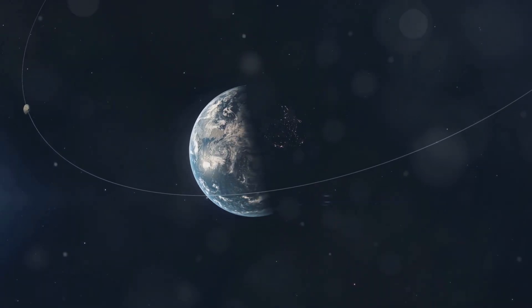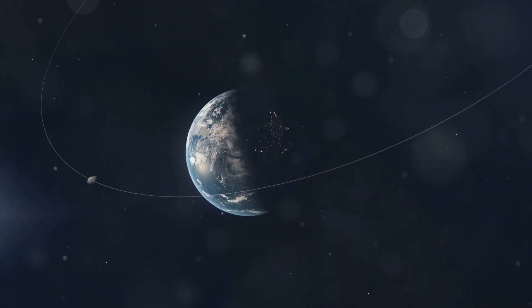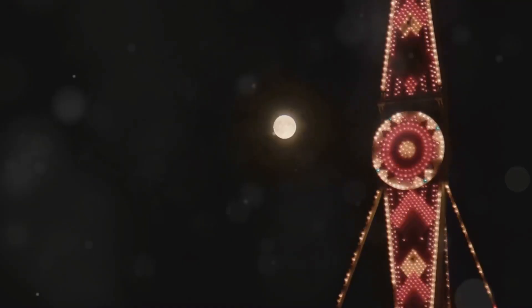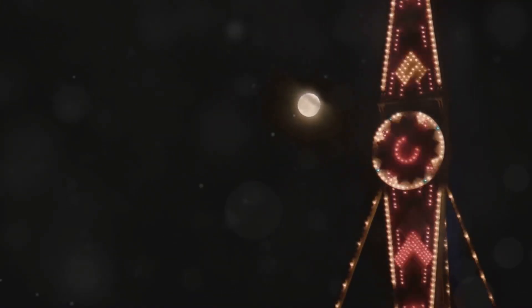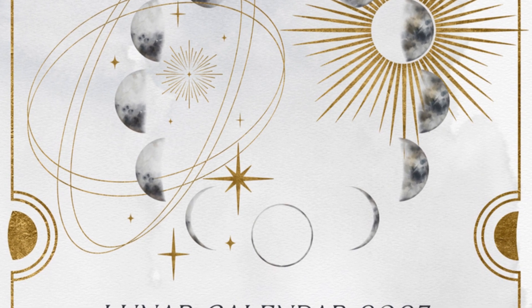But why does this happen? It's all because of lunar precession, which is the gradual shift in the orientation of the moon's orbit around Earth. Think of it like this. If you spin a top, it wobbles a bit as it spins. The moon's orbit does the same thing, wobbling over an 18.6-year cycle.